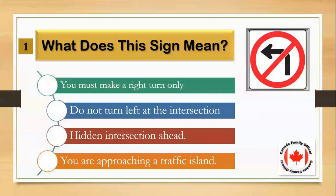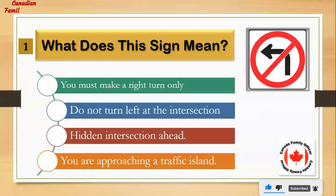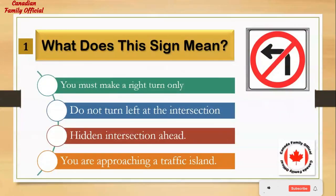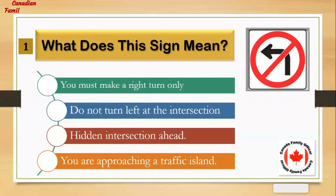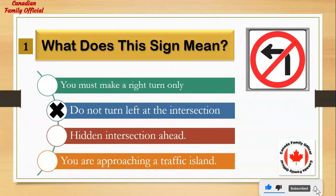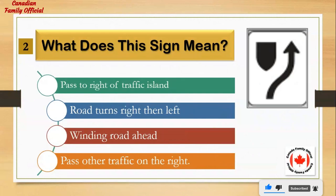Traffic sign. What does this sign mean? Number 1: you must make a right turn only. Number 2: do not turn left at the intersection. Number 3: hidden intersection ahead. Number 4: you are approaching a traffic island. And the answer is: do not turn left at the intersection.